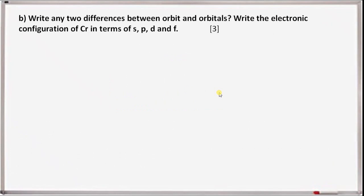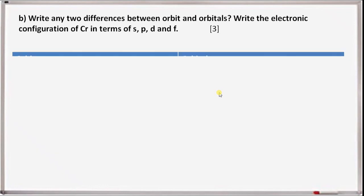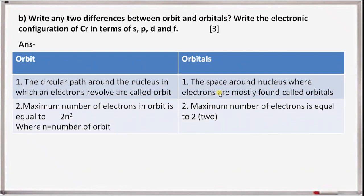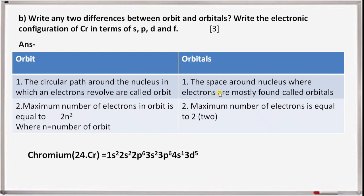Next question 5b: write two differences between orbit and orbital, and write the electronic configuration of chromium. Orbit: a circular path around the nucleus in which an electron revolves. Maximum electrons in an orbit equals 2n², where n is the orbit number. Orbital: the space around the nucleus where electrons are mostly found. Maximum electrons in every orbital is 2. Chromium, atomic number 24, has configuration: 1s² 2s² 2p⁶ 3s² 3p⁶ 4s¹ 3d⁵, because the half-filled d orbital shows stability, pulling one electron from 4s.